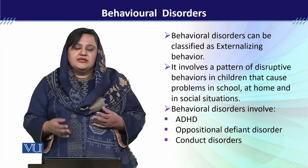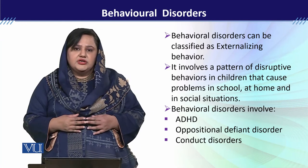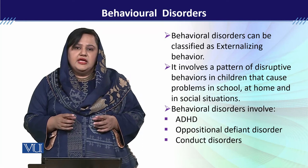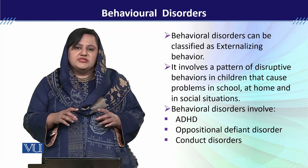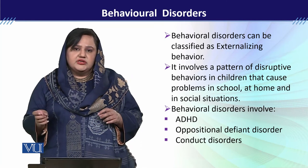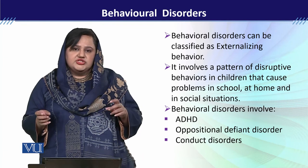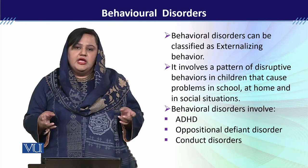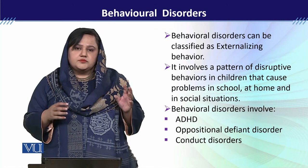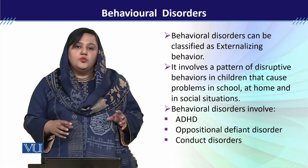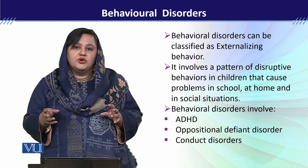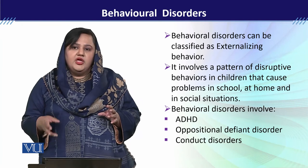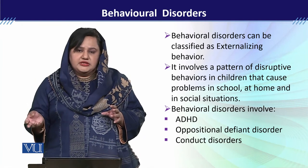The third disorder is Conduct Disorder. Conduct Disorder is actually a sequence of Oppositional Defiant Disorder. Children who have ODD before age 18 have a significant chance of developing Conduct Disorder when they reach adulthood.